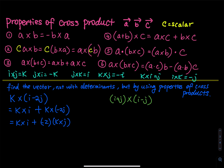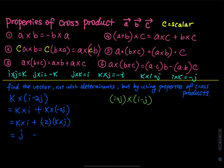Now we have k cross i — look it up — k cross i is j. And then k cross j is i, right over there. So you have j, plus negative 2 times k cross j, which is i. So this gives us j plus negative 2i.